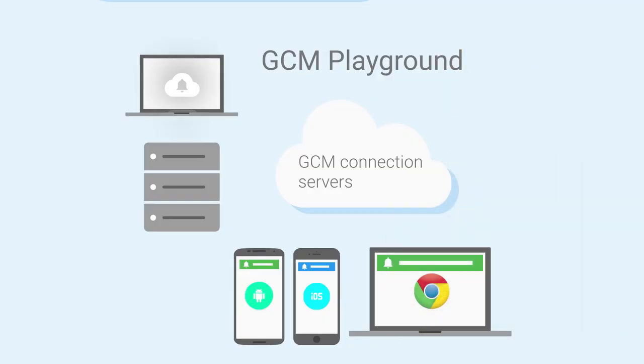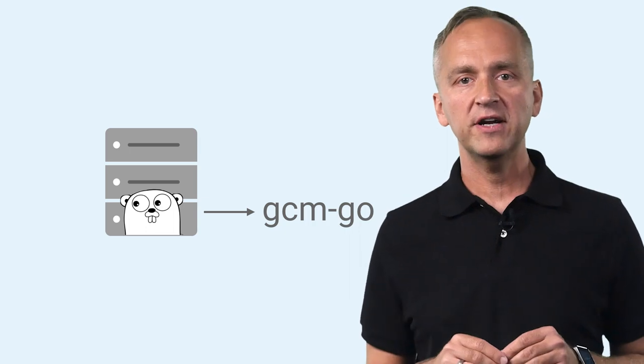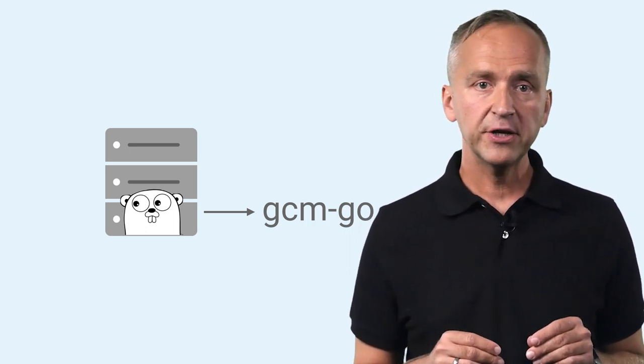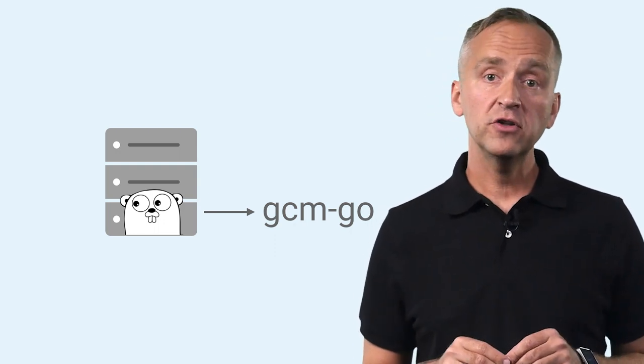Here is an example sequence. Once you build and launch the example Docker containers, go to the web UI to send a notification. The notification is delivered to the sample application server and distributed to the registered Android, iOS, and Chrome clients through GCM connection servers. In a real-life application, the server is the component you would integrate with your application-specific targeting logic. The GCM Playground makes it easier by providing most of the application server GCM integration code as part of the GCM Go library, which you can use in your own app server. Thank you for watching.